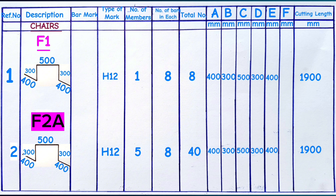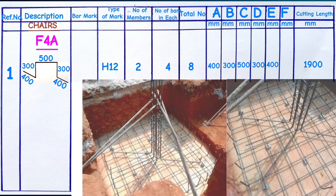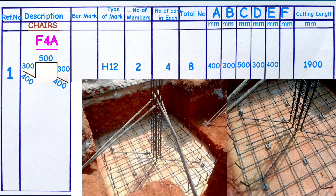For footing F2A, to get the number of steel bars to purchase for separators or chairs, simply refer to this table. Another example is footing F4A, which is 1.8 meters long along its four sides. The number of chairs required are 4 — one in each corner area with the column in the center. When a footing has both top bars and bottom bars, chairs or separators are needed. We arrange them so they fully support the top and bottom bars without sagging or shaking.